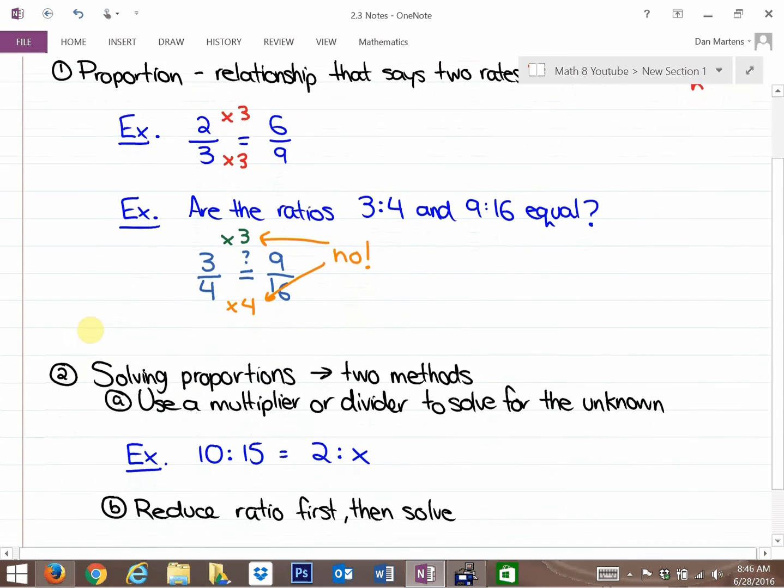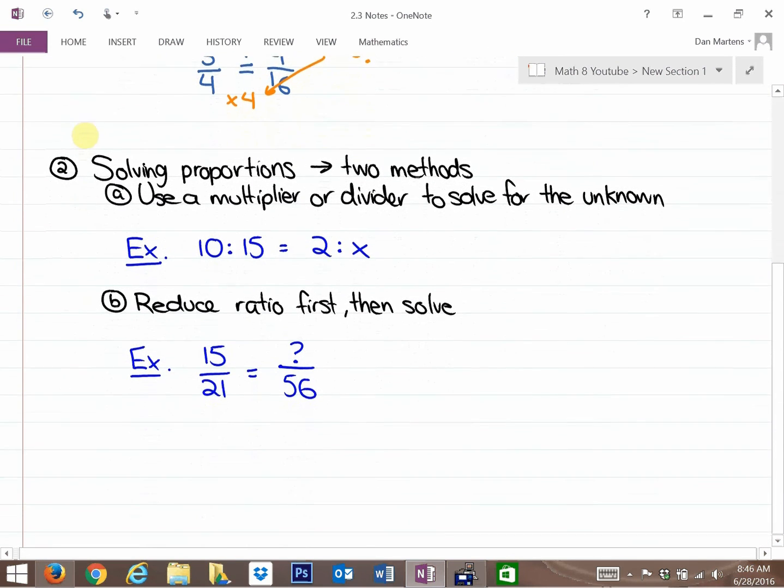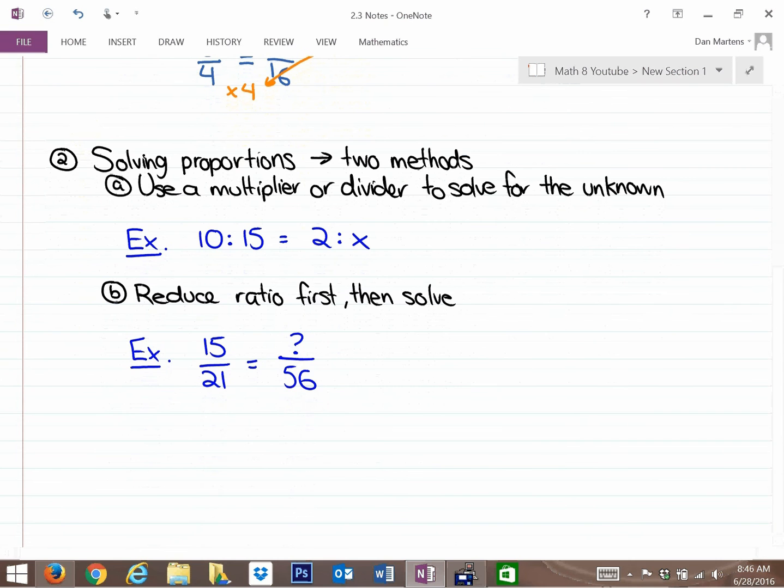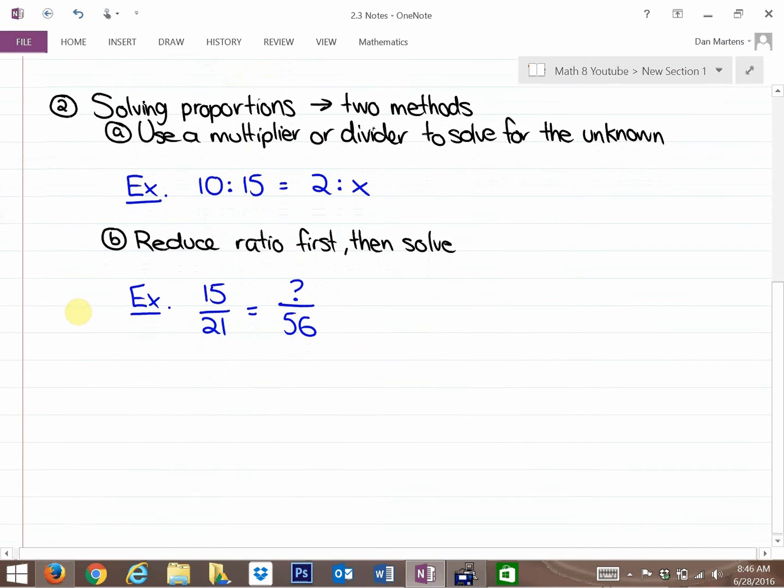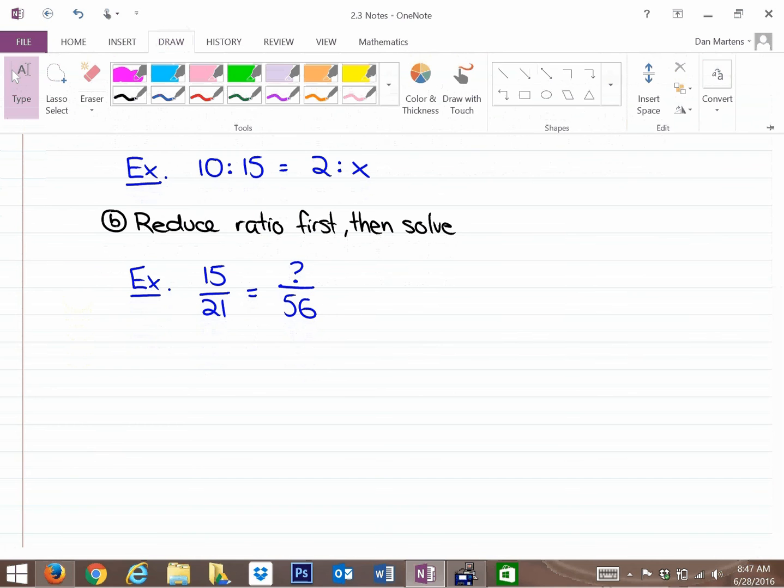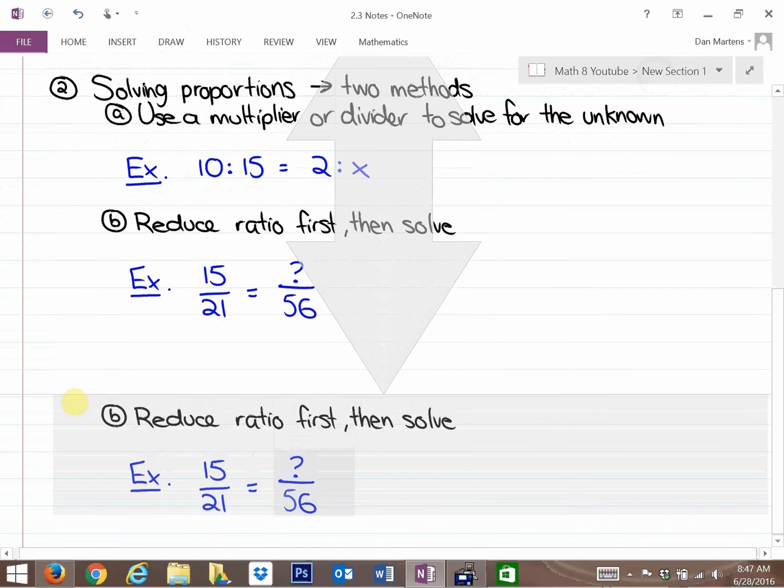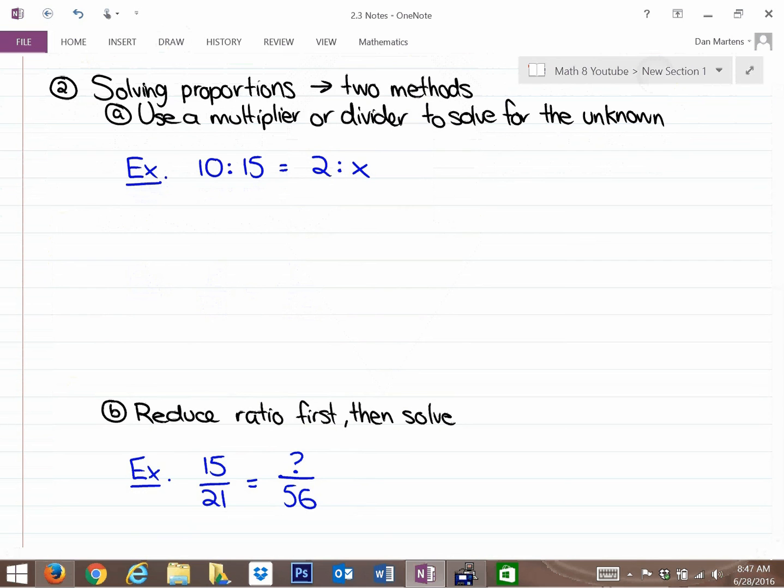So what we're going to do now is look at two ways to solve proportions. So if proportions state that two ratios or rates are equal to each other, what happens if we know that we have a proportion, but we need to solve for something we don't know? So there are two ways to do this, and you're going to find that out right now. So if we look at this first one, solving proportions, there's two methods. The first method is using a multiplier or divider to solve for the unknown.